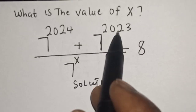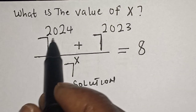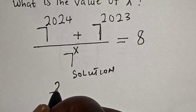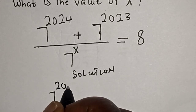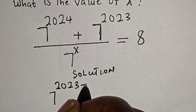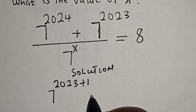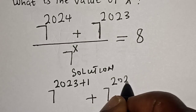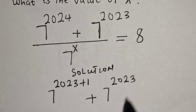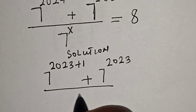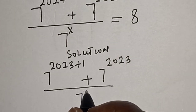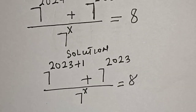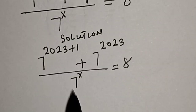Solution: this is 7 raised to power 2024 and this is 7 raised to power 2023. 7 raised to power 2024 can be written as 7 raised to power 2023 plus 1, plus 7 raised to power 2023, then divided by 7 raised to power x, is equal to 8.